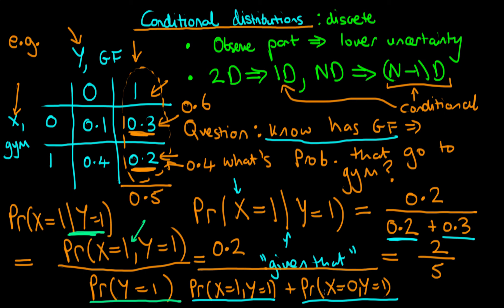In summary, conditional distributions are a way of updating our knowledge after we observe part of the system. That observation means there is lower uncertainty than before we made it. Because we know part of the system, the dimensionality of our problem — the number of processes about which we're uncertain — decreases. A two-dimensional distribution becomes one-dimensional, or an n-dimensional distribution becomes n-minus-one dimensional. Note that this assumes we're only observing one part of the system; if we observe more parts, the dimensionality decreases by the corresponding number of variables observed.